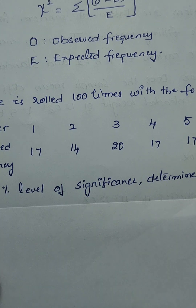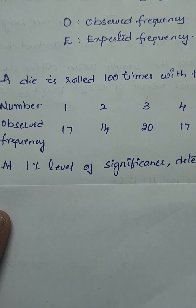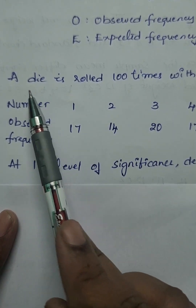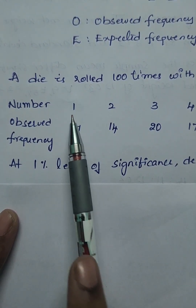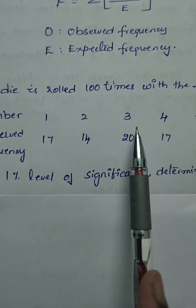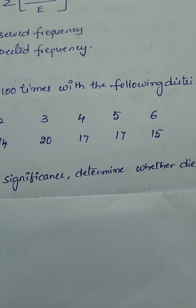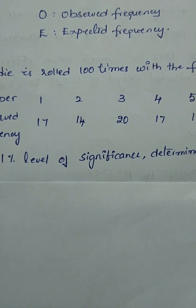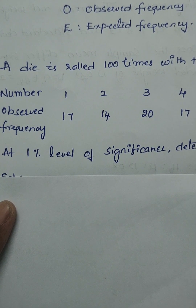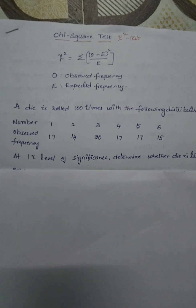A die is rolled 100 times with the following distributions. The number 1 occurred 17 times, number 2 occurred 14 times, number 3 occurred 20 times, number 4 occurred 17 times, and number 6 occurred 15 times. The problem asks: at 1 percent level of significance, determine whether the die is true or not.